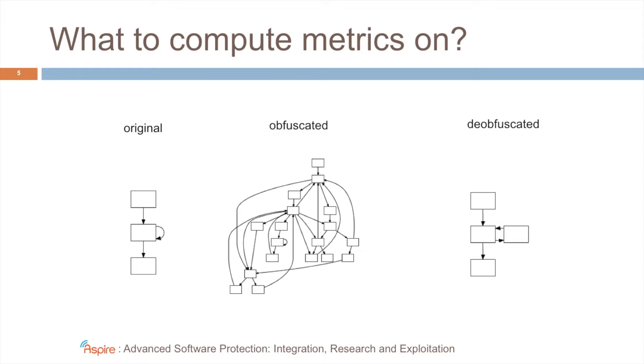As an example here, consider that an original control flow graph might look like this on the left here. And then when you obfuscate this code with a complex obfuscation technique, it might look like in the middle. But maybe after an attacker has studied your traces and has removed opaque predicates and other protections, he can simplify this control flow graph to something that looks like this. And the question is, for each attack step, which of these forms should we use, for example, to compute cyclomatic complexity?